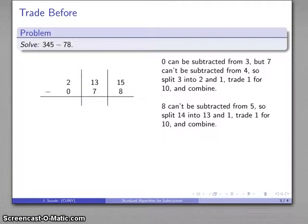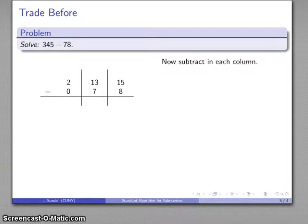Now, what I've done is I've now set everything up. I've traded before I had to do anything. And now I can perform my subtractions just like we did the last time. I'm going to take away 0 hundreds. I'm going to take away 7 tens. I'm going to take away 8 ones. And now I'm in a position where I can do that without any sort of having to stop in the middle. So I'll do that subtraction.